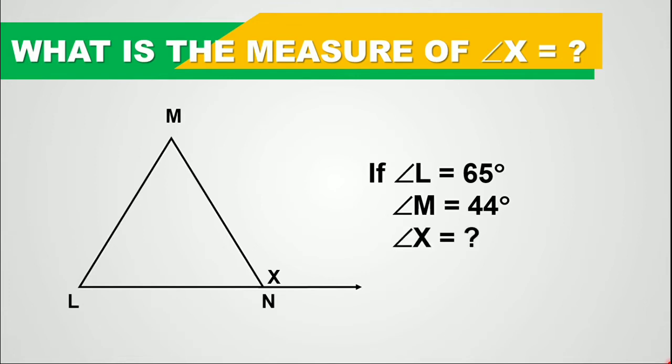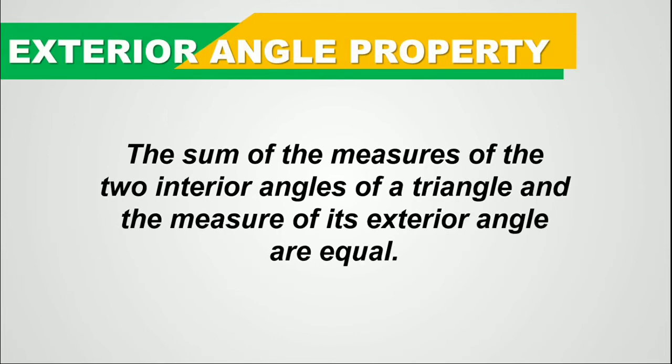In order to solve this, we will use the exterior angle property, which states that the sum of the measures of the two interior angles of a triangle and the measure of its exterior angle are equal.